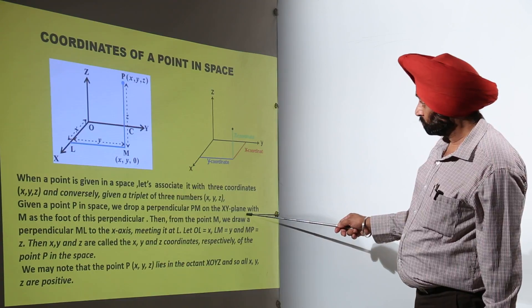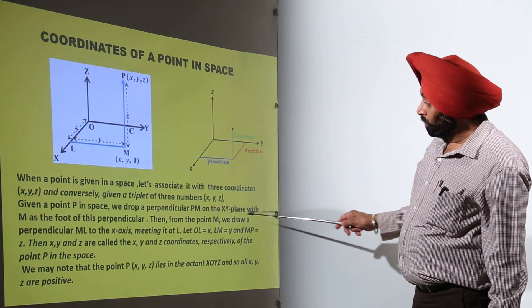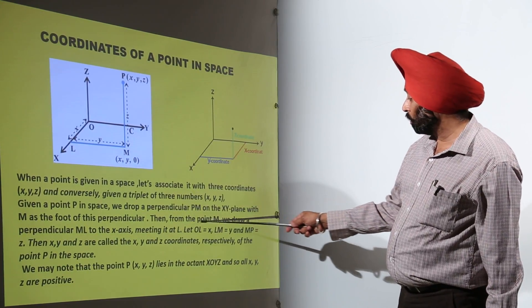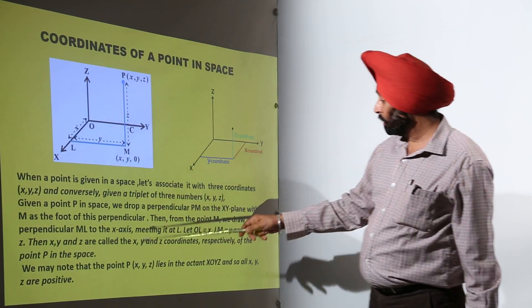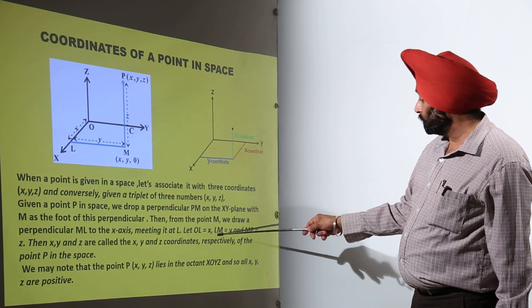With M as the foot of this perpendicular, here it is M. Then from the point M we draw a perpendicular ML on the X axis, meeting it at L.